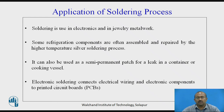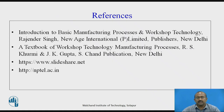Applications of soldering process: soldering is used in electronics and in jewelry metal work. Some refrigeration components are often assembled and repaired by high-temperature silver soldering process. It can be used for semi-permanent patching of a leak in a container or cooking vessel. Electronic soldering connects electrical wiring and electronic components to printed circuit boards, i.e., PCB. Some references include: Introduction to Basic Manufacturing Process and Workshop Technology by Rajinder Singh; Textbook of Workshop Technology and Manufacturing Process by Khormi Gupta; and NPTEL study material.